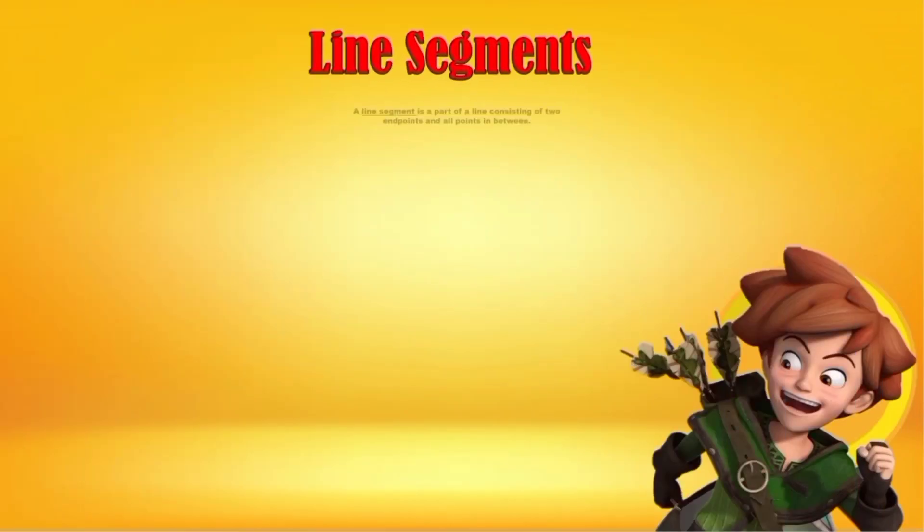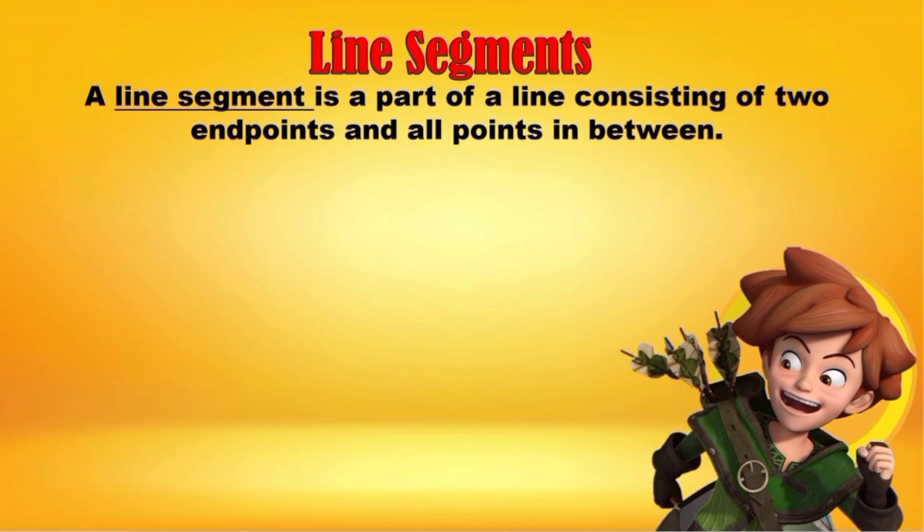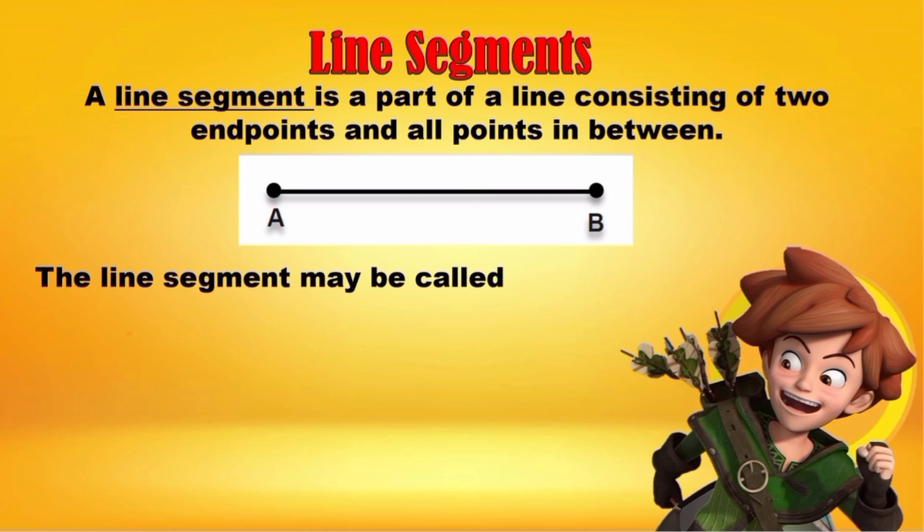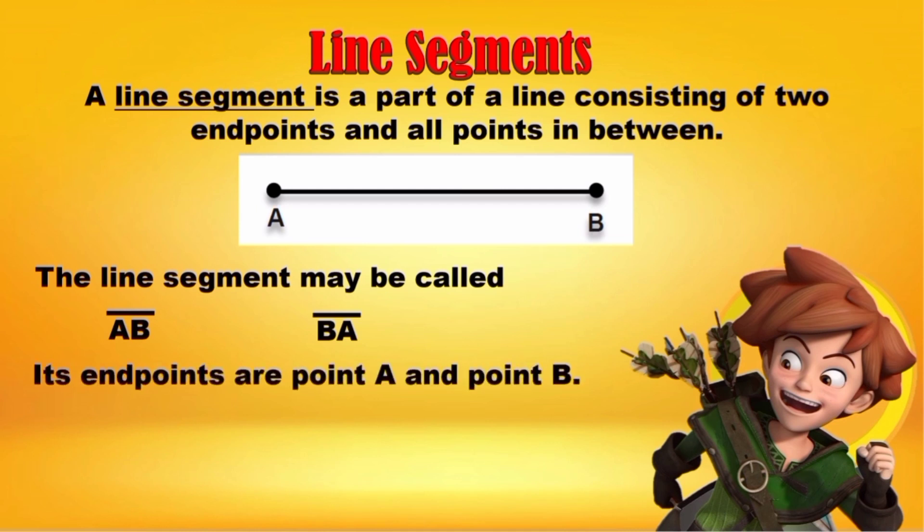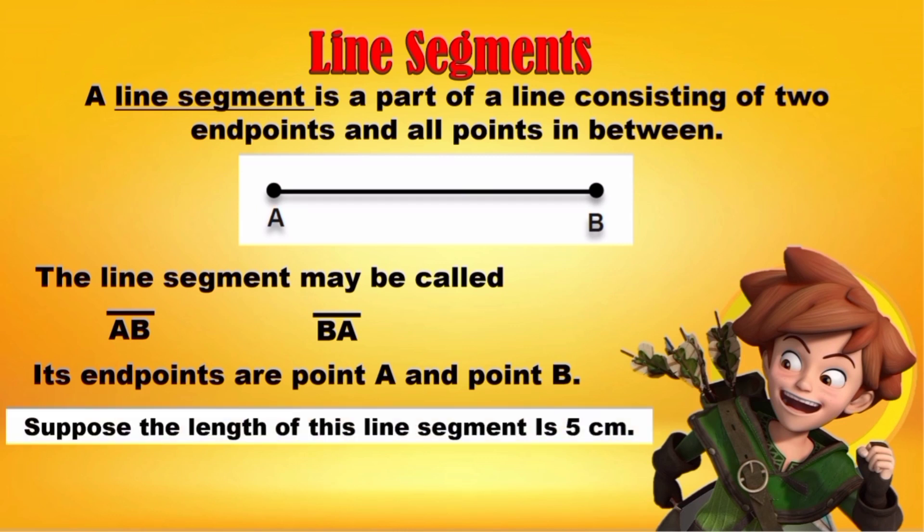A line segment is a part of a line consisting of two endpoints and all points in between. Now, here is an illustration of a line segment. The line segment may be called line segment AB or line segment BA. Its endpoints are point A and point B. Suppose that the length of this line segment is 5 centimeters. We write, line segment AB is equal to 5 centimeters.